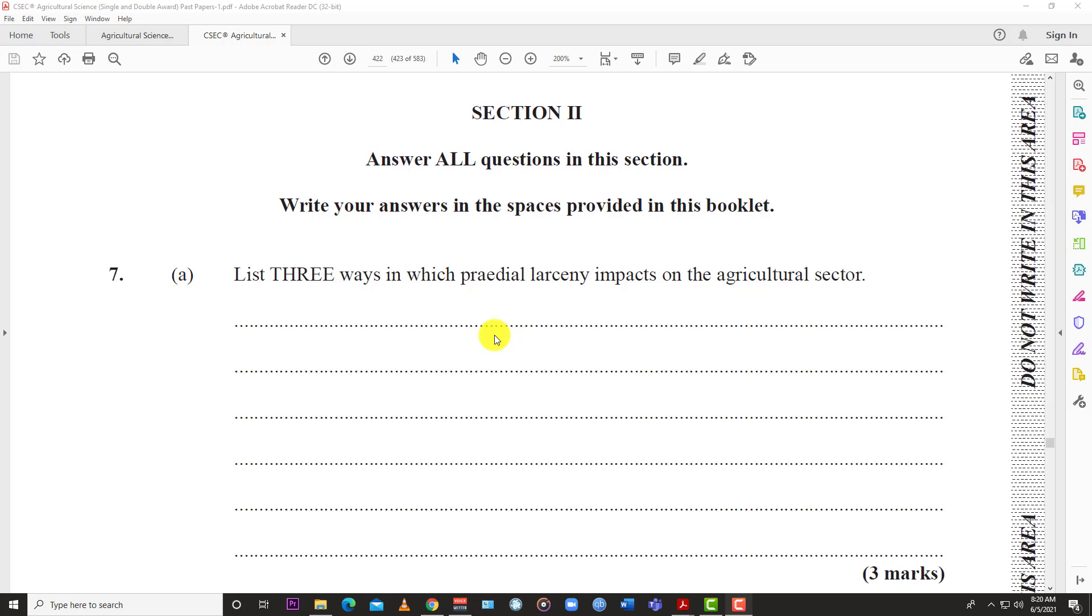Welcome back to LearnSKN. Today we're looking at the May-June 2017 Agricultural Science Single Award Paper 2. We completed questions one through six in previous videos, so we're going to continue with question seven today. Let's jump right in.